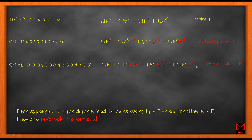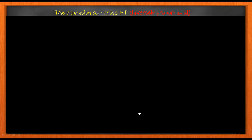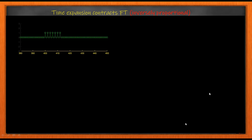When I add one more zero I write the extra factors as W¹·W¹, W²·W², W³·W³ — this adds two cycles to the FT. You can see the pattern: as I keep expanding the signal, the multiplicative factors in the Fourier transform directly imply more cycles in the FT, meaning the FT gets more and more contracted. That is why time expansion in the time domain leads to more cycles in the FT, or contraction in the FT — they are inversely proportional. This is the time expansion property.